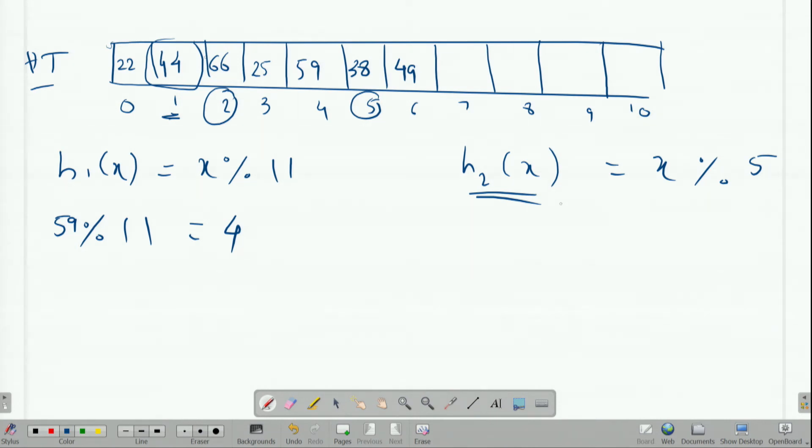But suppose I have a value, say 70, and 70 mod 11 is again 4. The first hash function is pointing to key 4. Now we go to slot 4 and check that it is already filled. In this case, we apply the second hash function.